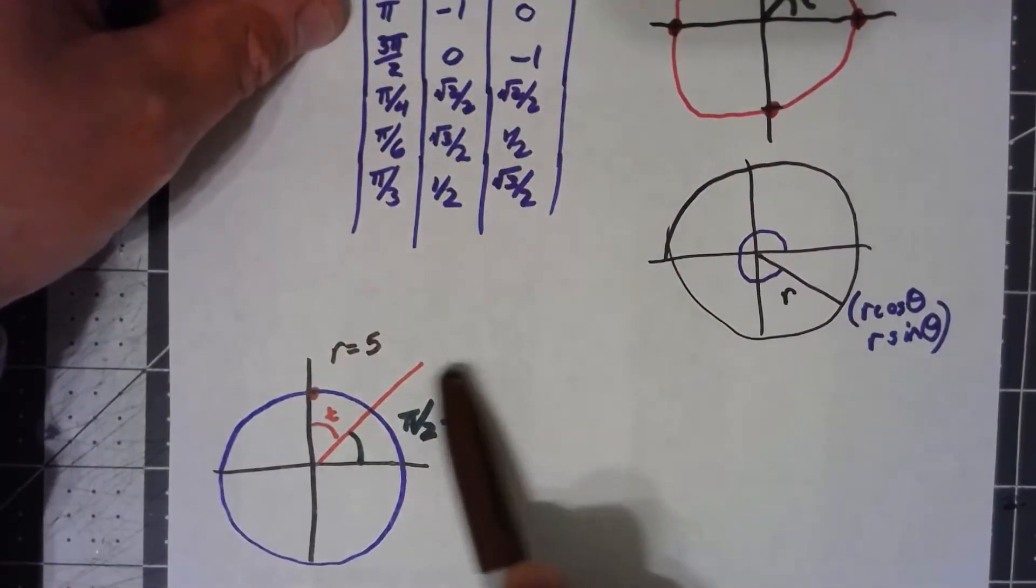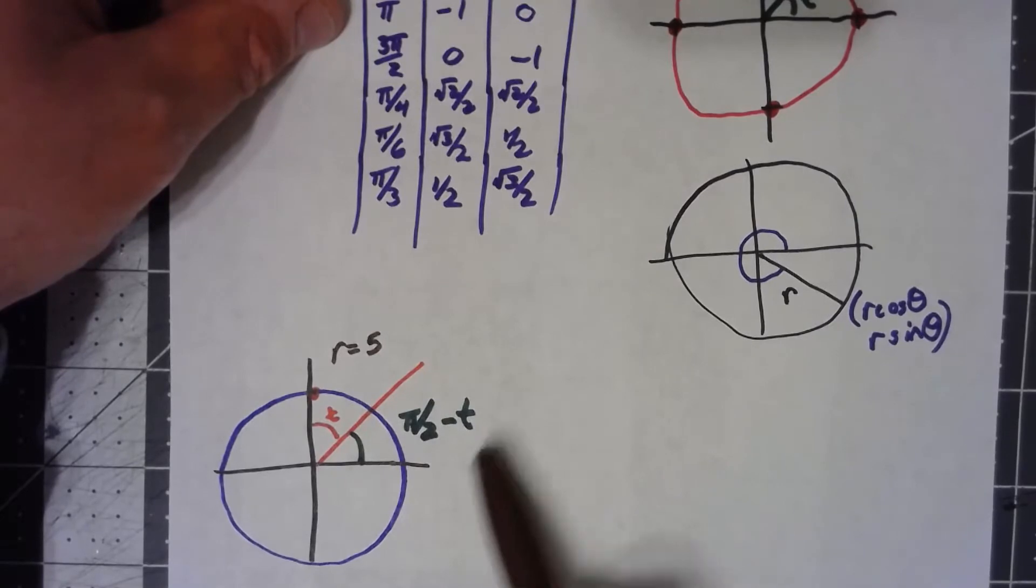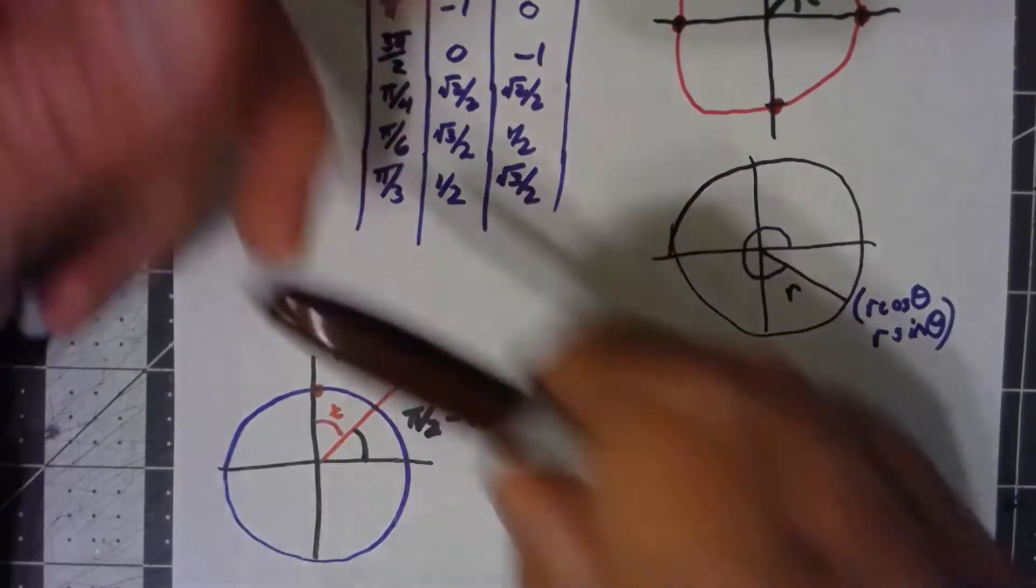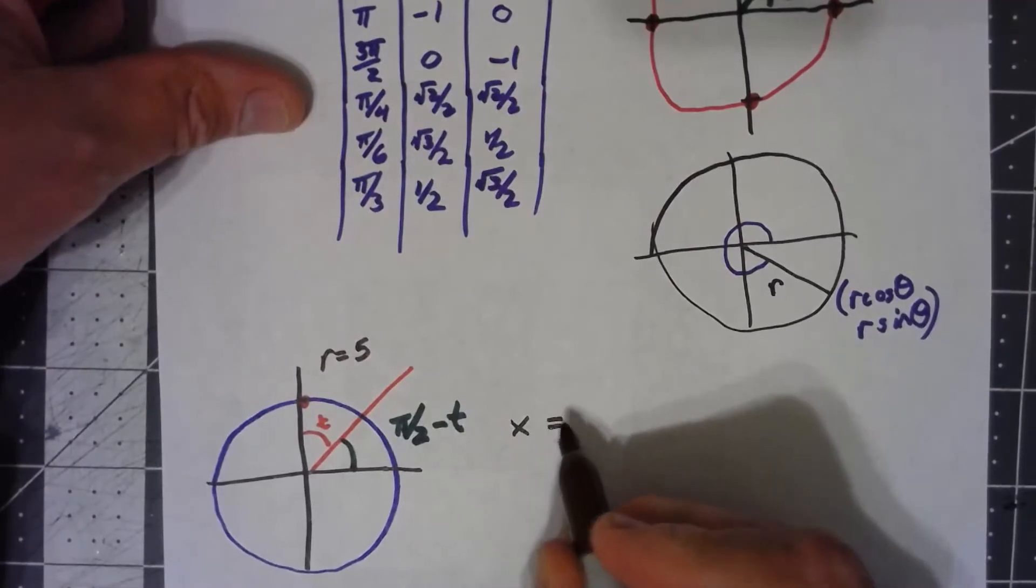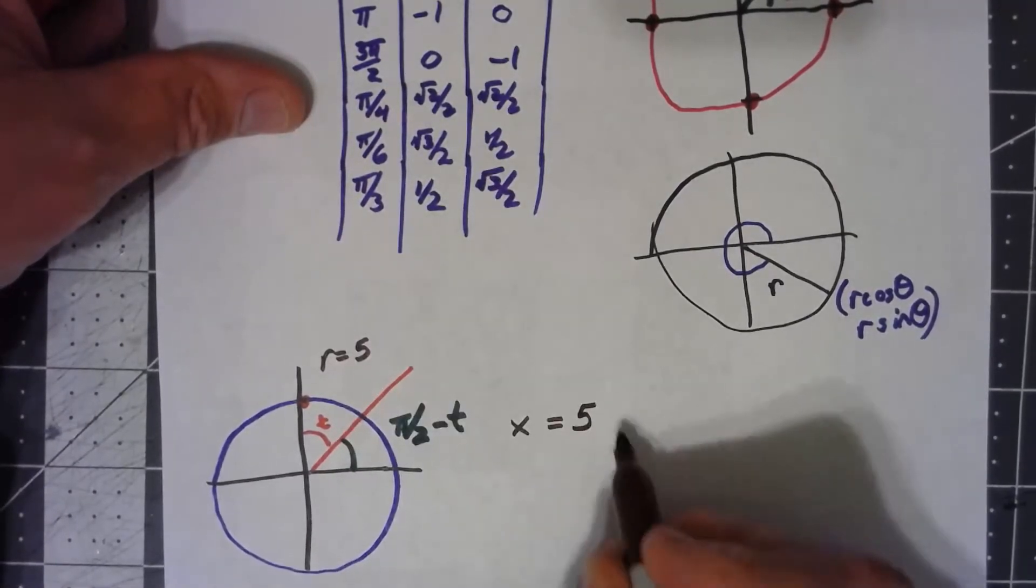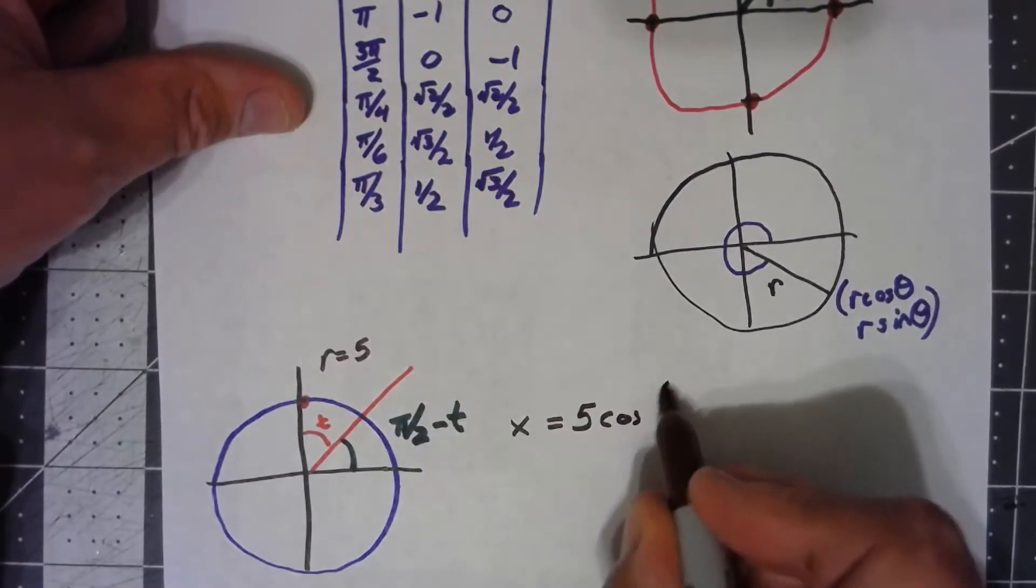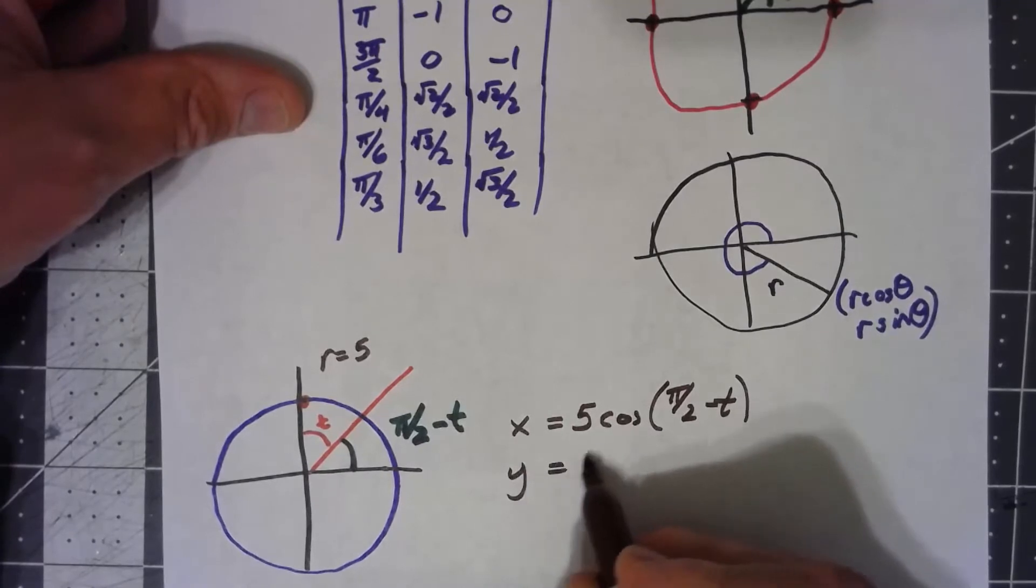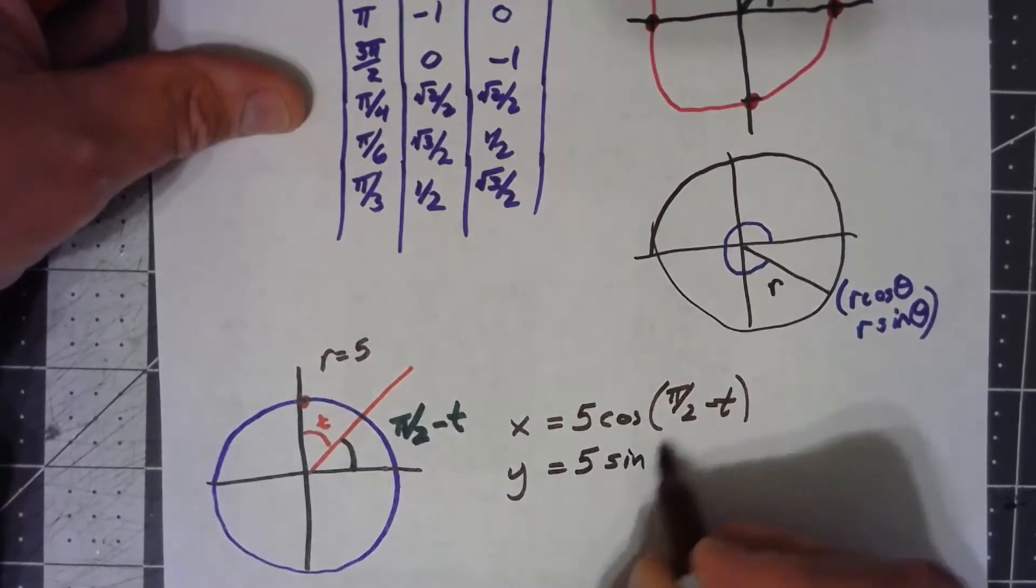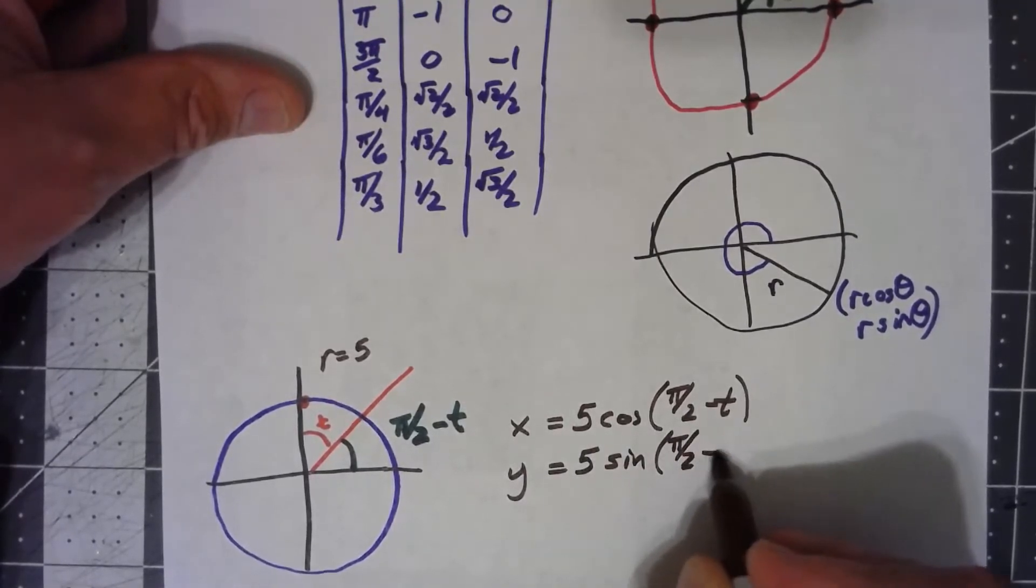I can basically use this, but my theta is now this pi over 2 minus t, because that's the standard position. So my x would be my radius 5 times the cosine of pi over 2 minus t. My y would be 5 times the sine of pi over 2 minus t.